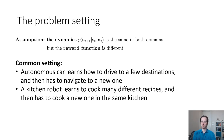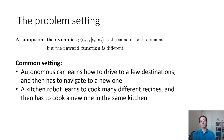For example, it captures the setting where you have an autonomous car that learns how to drive to a few destinations in the source domain and then has to navigate to a new destination in the target domain. Or a robot in a kitchen that has to learn to cook a variety of different recipes in the source domain, and then in the target domain it has to cook a new recipe in the same kitchen. In both cases, the physics — the dynamics governing the world — remain the same, but the reward function is altered.